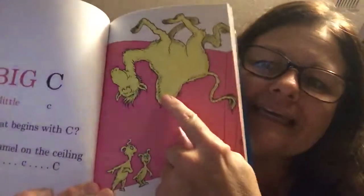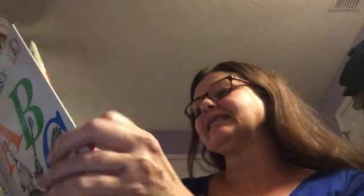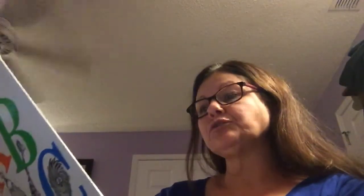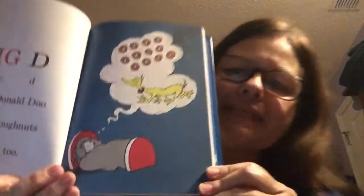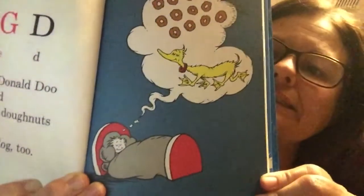Look at that camel up there on the ceiling — he's upside down! Big D, little D. David Donald Doo dreamed a dozen doughnuts and a duck-dog too. Silly — look at that duck-dog! What letters next? A B C D E.